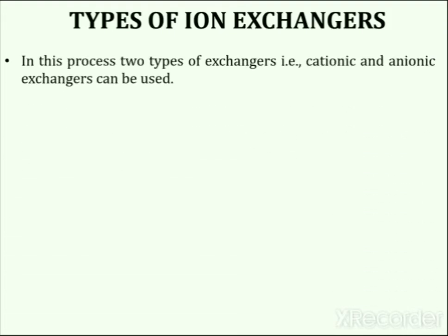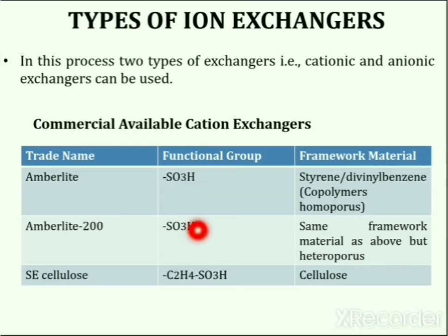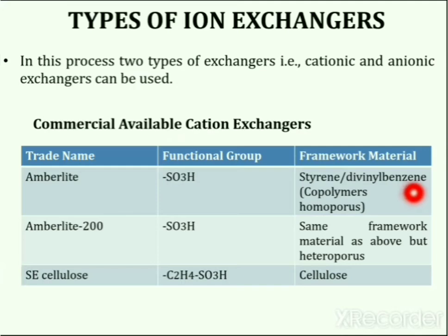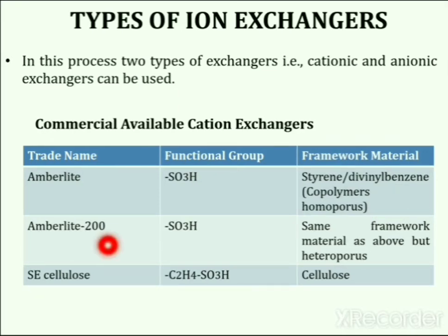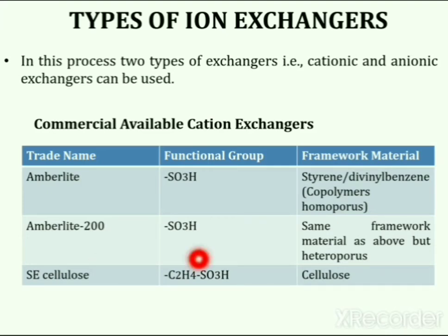There are two types of ion exchangers: cationic and anionic. The following table contains some commercially available cation exchangers. For example, Amberlite has SO₃H functional groups and a styrene/divinylbenzene framework material, and the co-polymers used are homoporous in nature. Next is Amberlite 200, which contains SO₃H functional groups and the same framework material, but the co-polymer used is heteroporous in nature. Next is SE cellulose, which contains C₂H₄SO₃H functional groups and cellulose as the framework material.